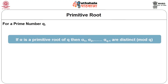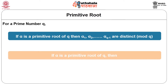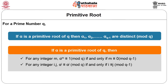Key properties: if α is a primitive root of prime q, then for any integer m, α^m ≡ 1 mod q if and only if m ≡ 0 mod (q−1). And for any integers i and j, α^i ≡ α^j mod q if and only if i ≡ j mod (q−1).